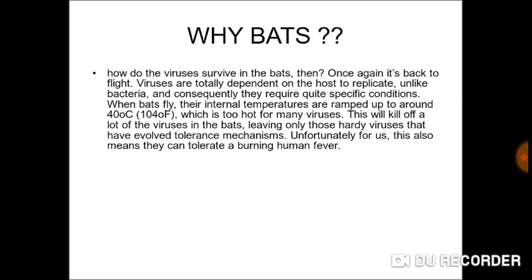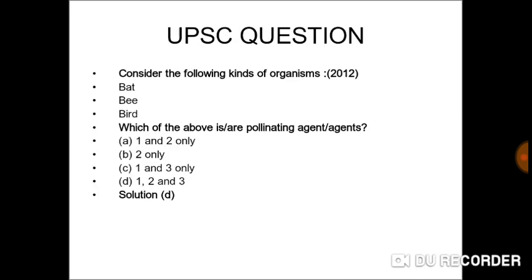Bats do give us benefits — they are important pollinators, meaning they help flowers, several greens, and several fruits to pollinate. On the other side, they also eat away some mosquitoes. There is a relevant UPSC 2012 question on this topic, where they listed organisms like bat, bee, and bird and asked which are pollinating agents. The answer is all three, which shows how important this topic is especially for prelims.